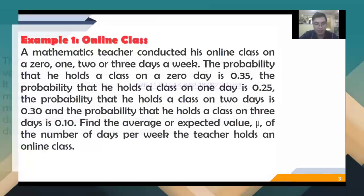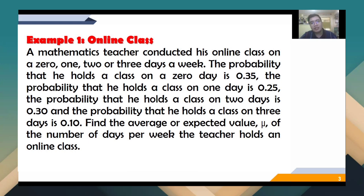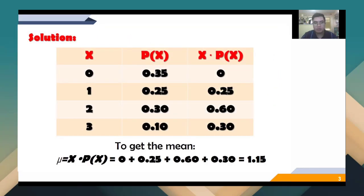For example, a mathematics teacher conducted his online class on 0, 1, 2, or 3 days a week. The probability that he holds a class on 0 days is 0.35. The probability that he holds a class on one day is 0.25. And the probability that he holds a class on two days is 0.30. And the probability that he holds the class on three days is 0.10. The question is: Find the average or the expected value of the number of days per week the teacher holds online classes. So x is 0, 1, 2, and 3. The probability of getting x is 0.35, of 1 is 0.25, of 2 is 0.30, and 3 is 0.10.